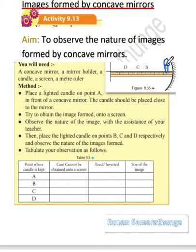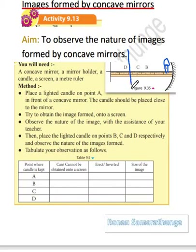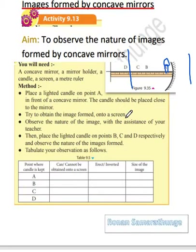We must understand that the distance between the mirror and the candle should be quite close. Then we are going to try to observe this image in the mirror and try to get it onto a screen. It is useless putting one in the back, so we will try to screen it in the front. You can place a white sheet and see if you can get it screened on some side. We are going to observe the nature of the image with the assistance of our teachers.